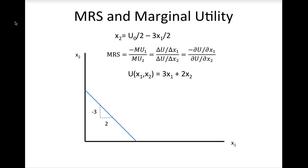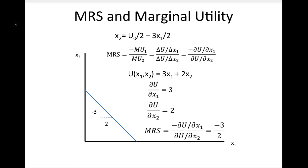The marginal rate of substitution can be found by taking the ratio of the marginal utility from good 1 over the marginal utility of good 2, which is the ratio of the partial derivatives of the utility function with respect to goods 1 and 2. To take the partial derivative, take the derivative of the function with respect to one variable and treat the other variable as a constant. For example, with the utility function for this indifference curve, the partial derivative with respect to x1 is 3 and the partial derivative with respect to x2 is 2, so the marginal rate of substitution is negative 3 divided by 2. Since we know the marginal rate of substitution is always negative, we often omit the negative sign when referring to it.